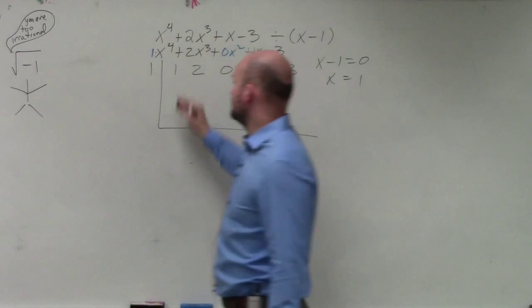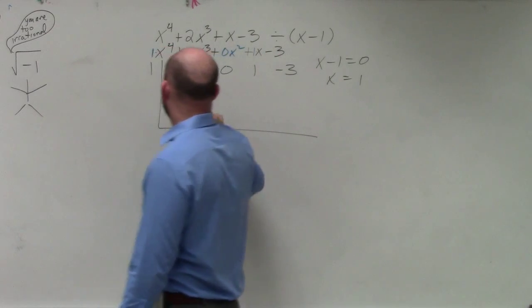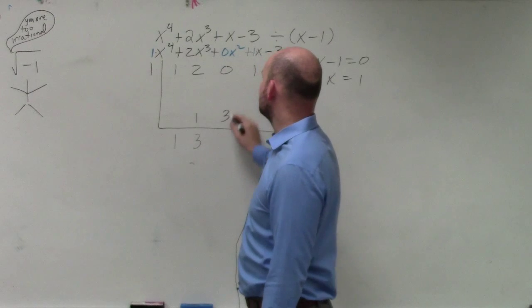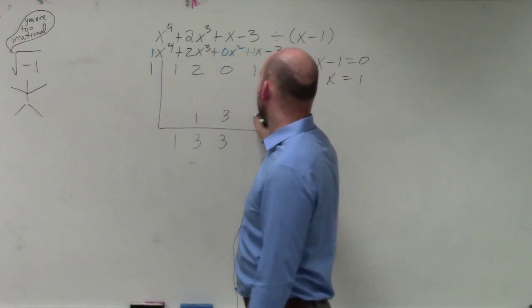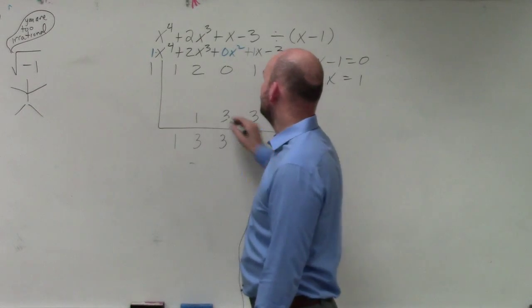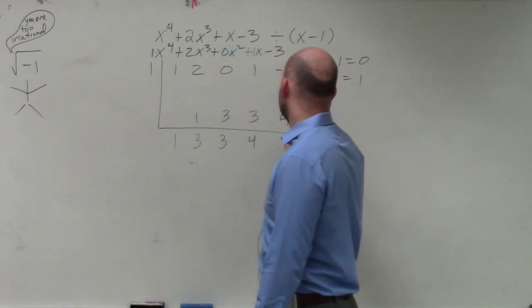So now let's do synthetic division. Bring down the 1. 1 times 1 is 1. 2 plus 1 is 3. 3 times 1 is 3. 0 plus 3 is 3. 3 times 3 is 3. 1 plus 3 is 4. 4 times 1 is 4. That becomes a 1.